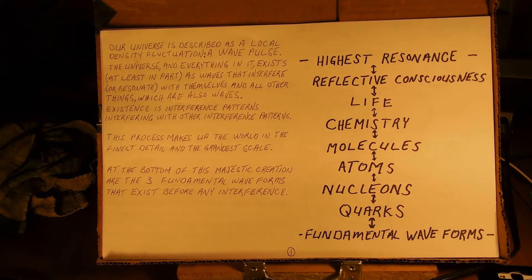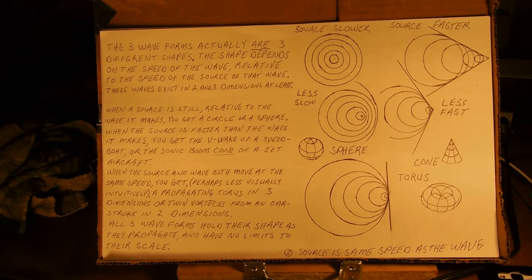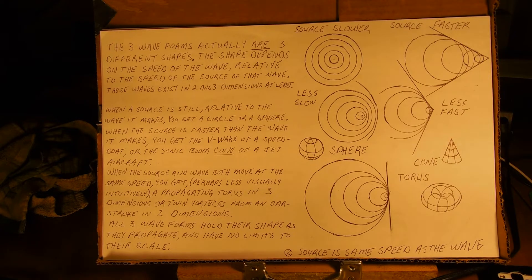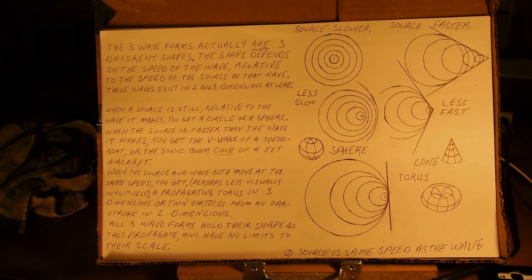At the bottom of this majestic creation are the three fundamental waveforms that exist before any interference. The three waveforms are three different shapes, and the shape depends on the speed of the wave relative to the speed of the source. When a source is still relative to the wave it makes, you get a circle or a sphere. When the source is faster than the wave, you get the V-wake of a speedboat or the sonic boom cone of a jet aircraft. When the source and wave both move at the same speed, you get a propagating torus in three dimensions, or twin vortices from an oar stroke in two dimensions.